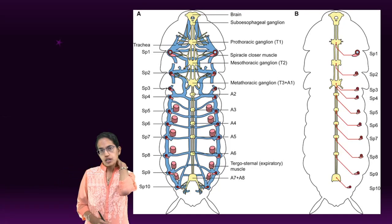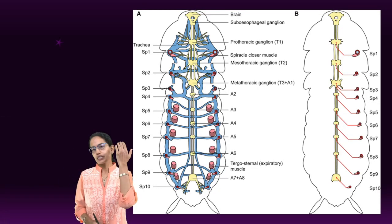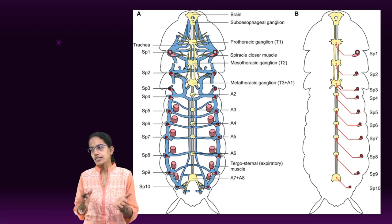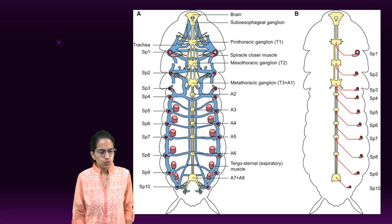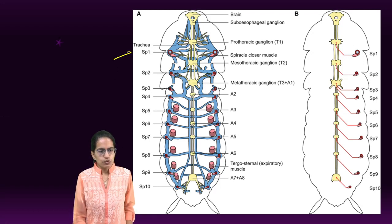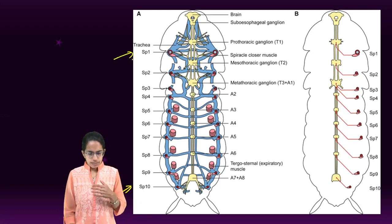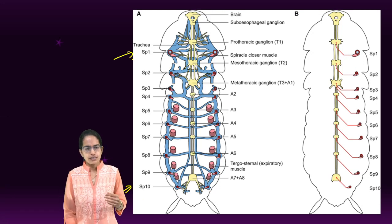Respiration in the cockroach occurs through trachea. Trachea is present on the lateral side of the body and it opens into 10 pairs of spiracles numbered from S1 to S10.